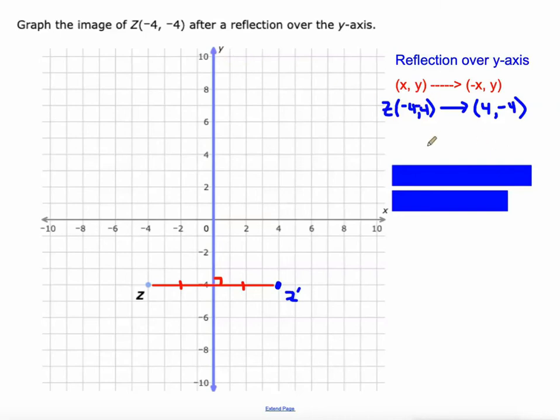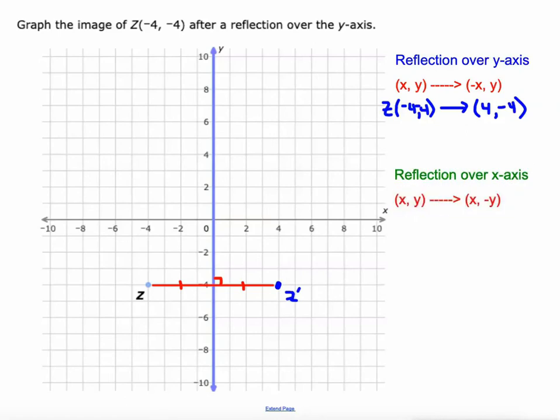I had the wrong y value to begin with. So (-4, -4). Now let's do a reflection over the x-axis. The rule for that is x,y becomes x,-y. So if we've got Z at (-4, -4) and we apply this rule, then Z double prime is going to be: x stays the same at -4, y becomes opposite, it was -4, it'll become positive 4. So (-4, 4) would be a reflection over the x-axis.